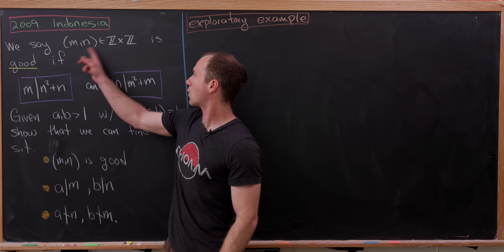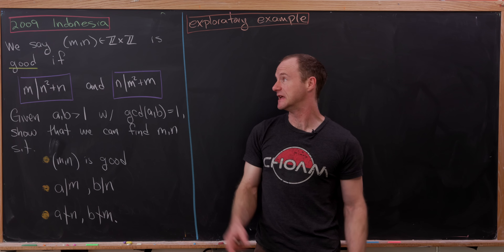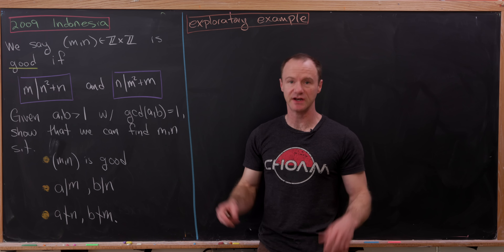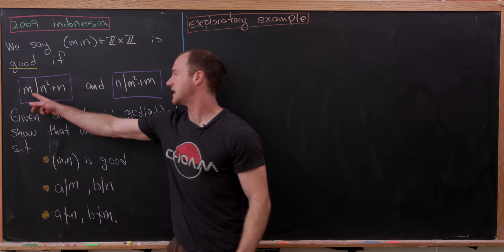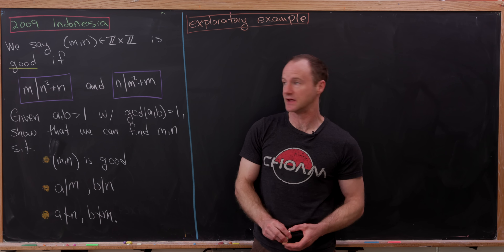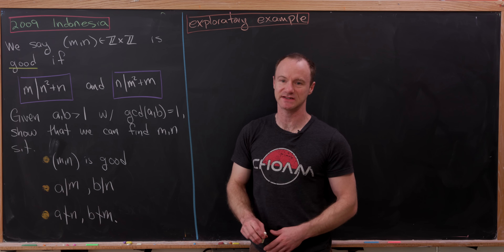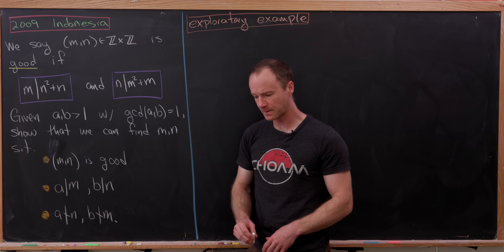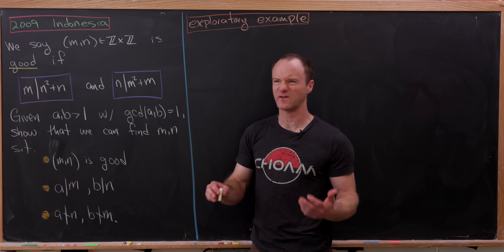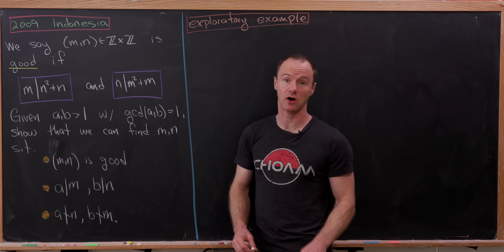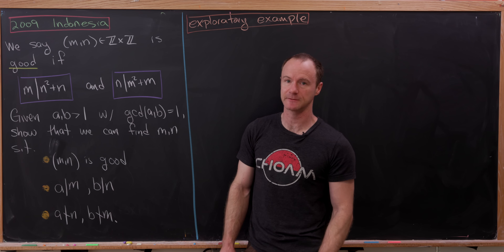We say that an ordered pair of integers m, n is 'good' if m divides n² + n and n divides m² + m. Maybe to get yourselves warmed up, you could find a bunch of ordered pairs that are good, just to get an idea of what these things look like.